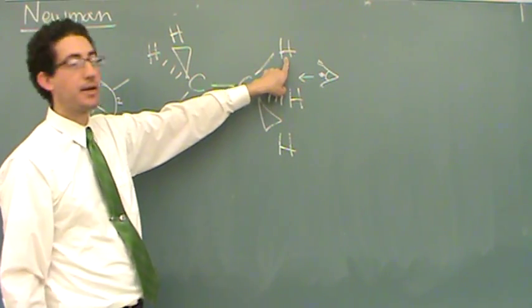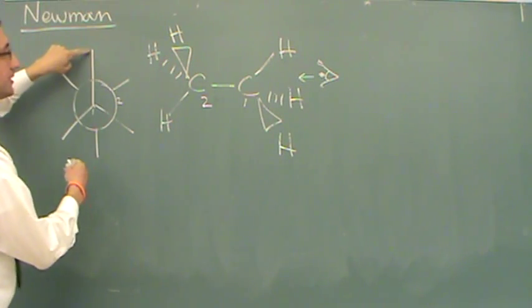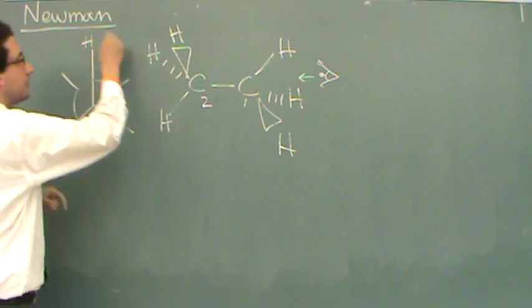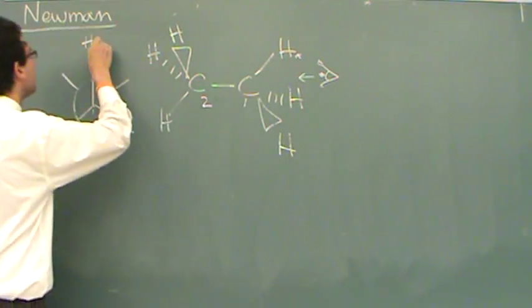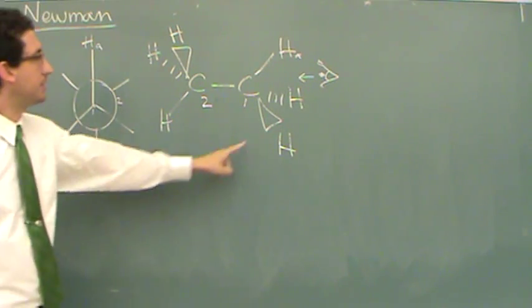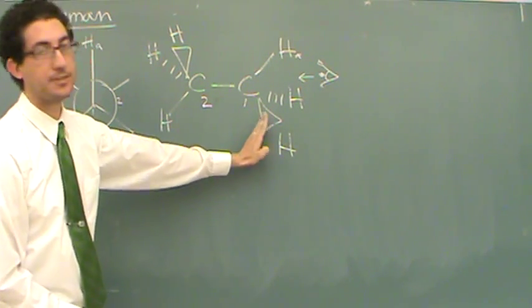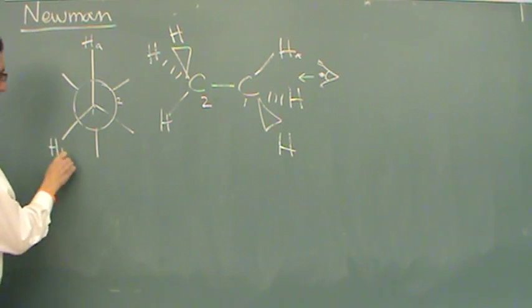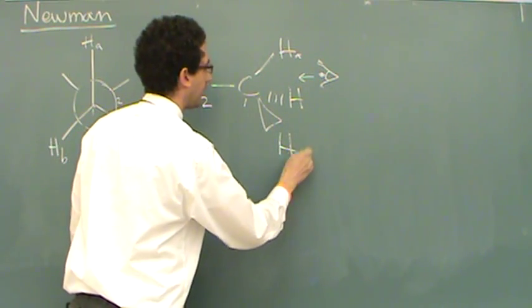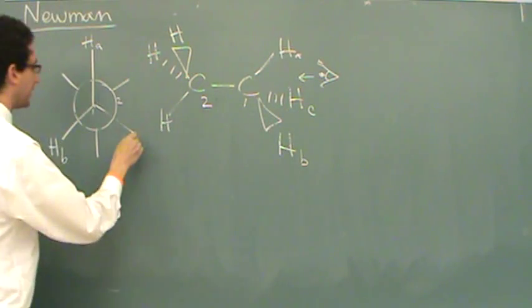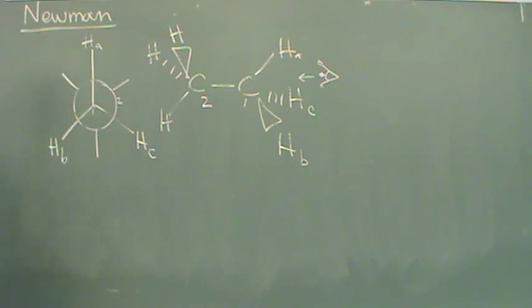Thus, this hydrogen right here, if you look in that direction, is this one right here. There's this hydrogen. I'll call it hydrogen A. This hydrogen here is on the left as you look at it, so that's this hydrogen. I'll call it hydrogen B. And then hydrogen C, which would be slightly to the right of you, would be right there.